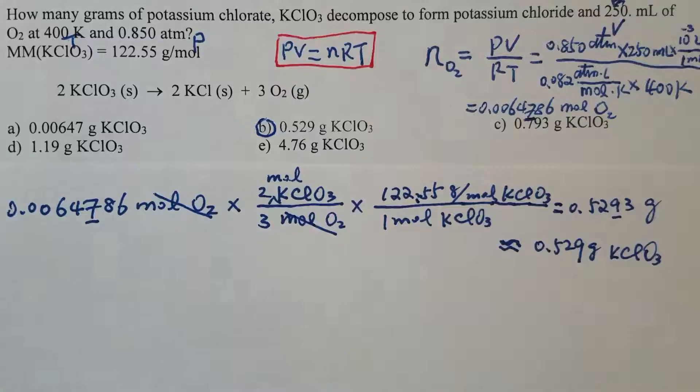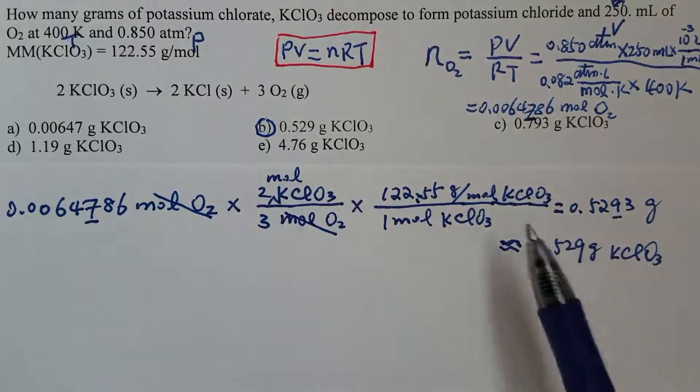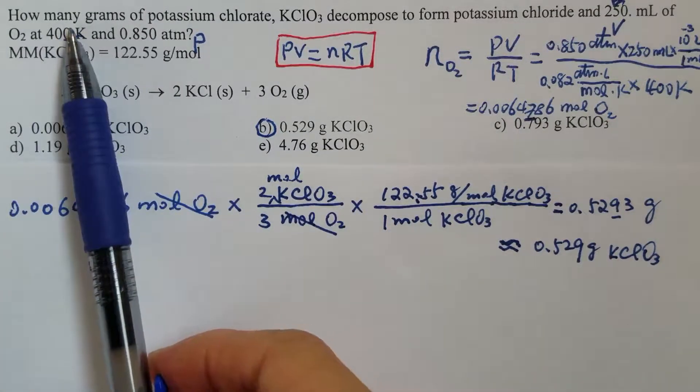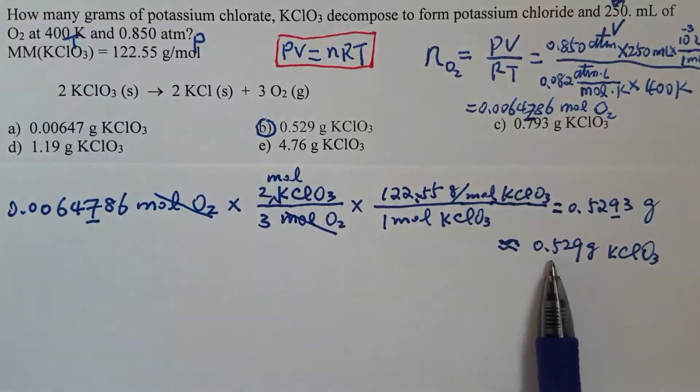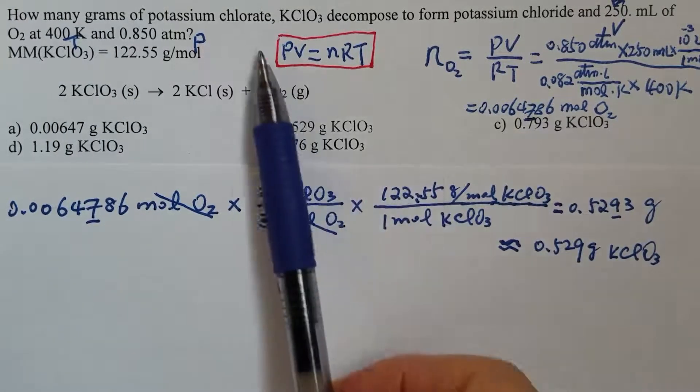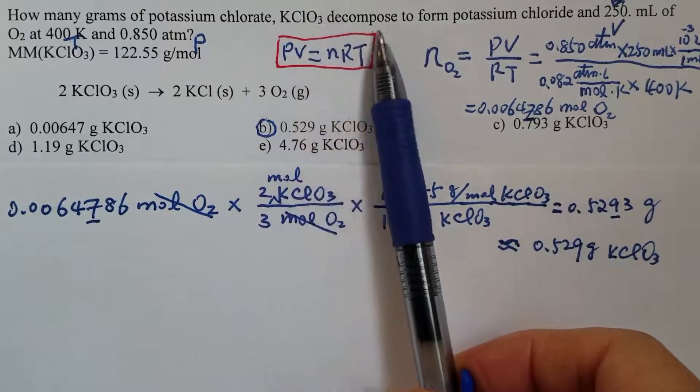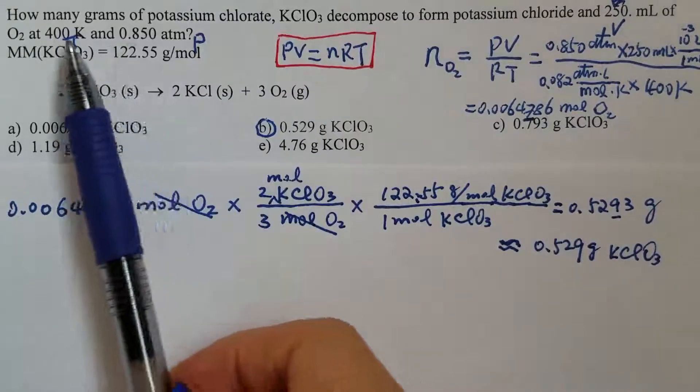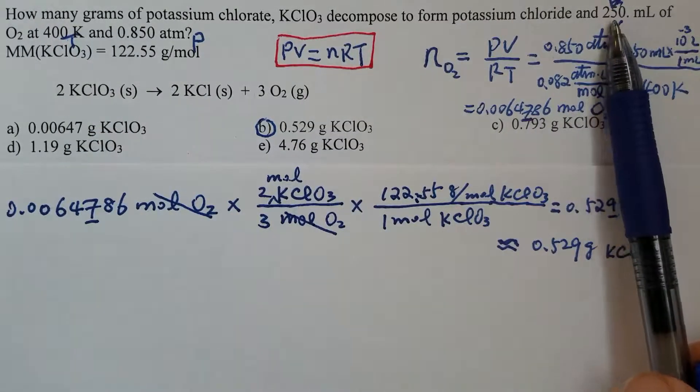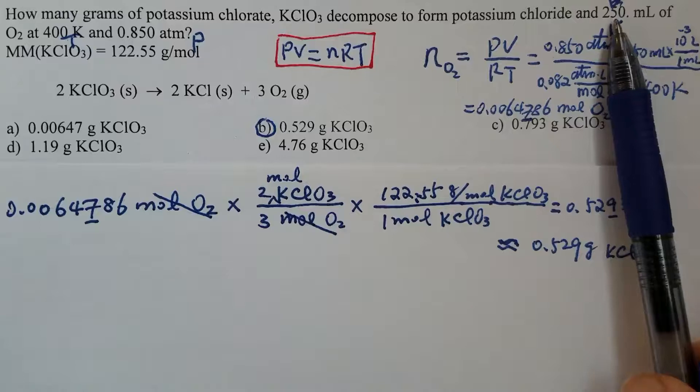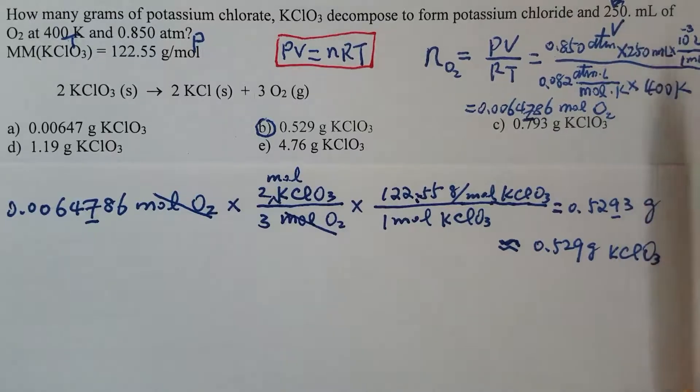So it means it would need 0.529 grams of potassium chlorate to form or to generate 250 milliliters of oxygen.